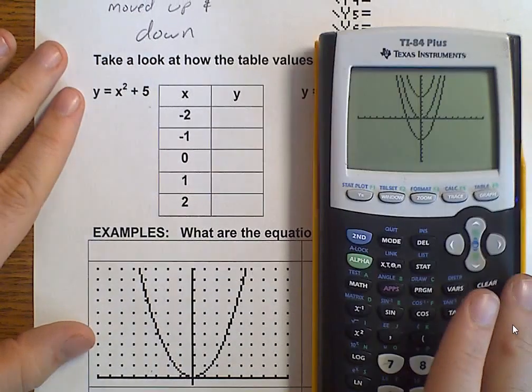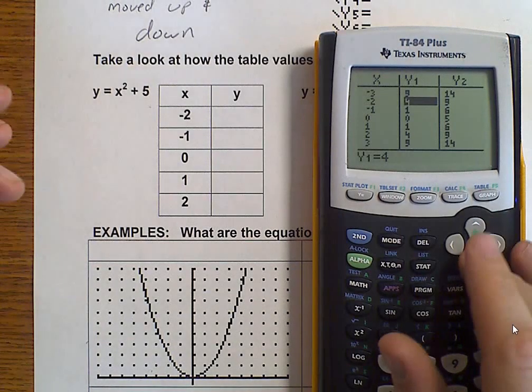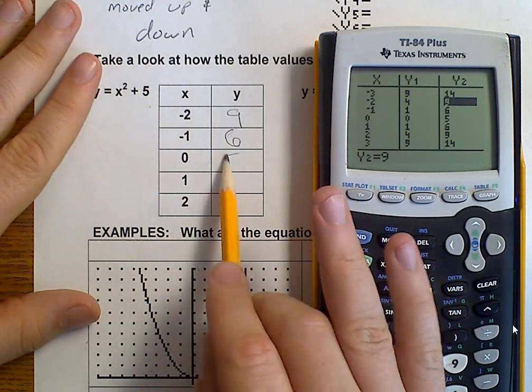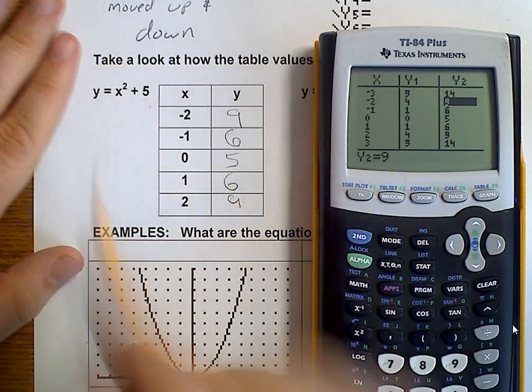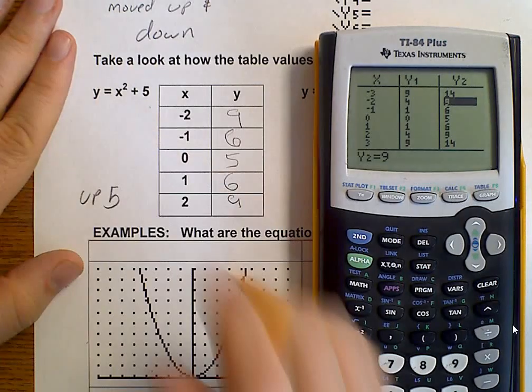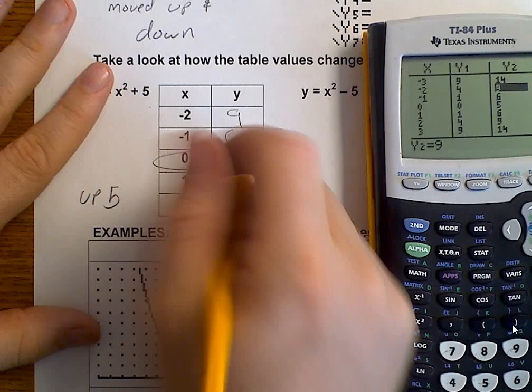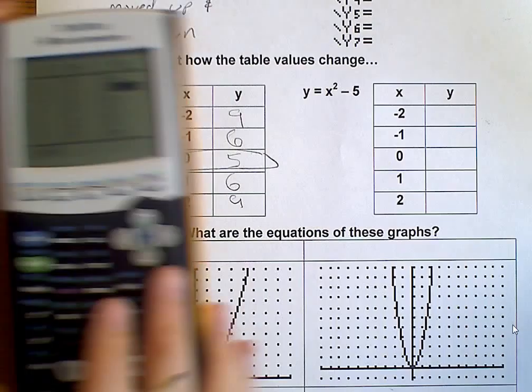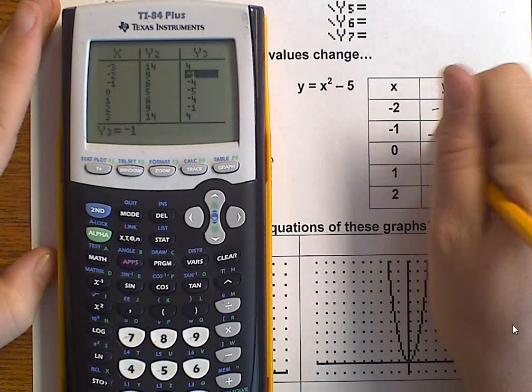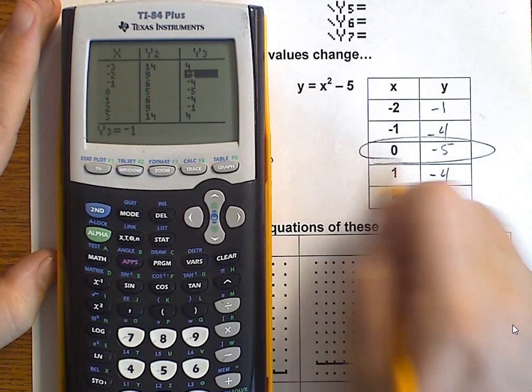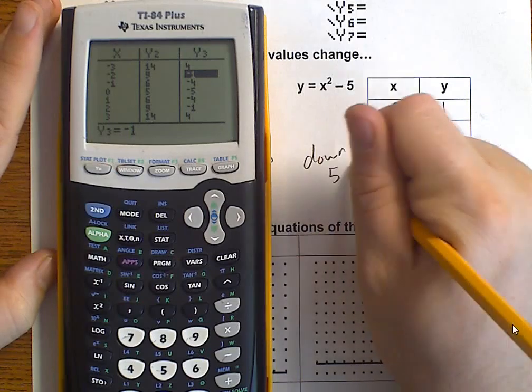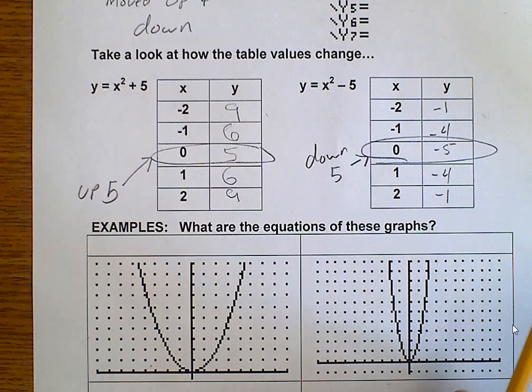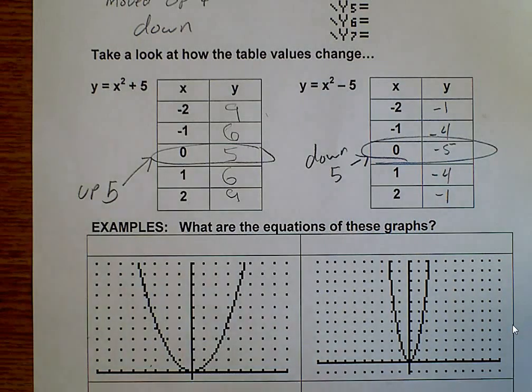It's basically all the change that we did. It either moved up or it moved down. We go to our table. Again, y1 is x squared. We're looking at y2. Now, we have 9, 6, 5, 6, 9. It went up 5. And notice how this one is changed. Okay? It went up 5. We look at y3. Negative 1, negative 4, negative 5, negative 4, negative 1. This one went down 5. Notice it was at 0, 0. Now, it's at 0, negative 5. So, that moved it up or down, depending on how we moved it, plus or minus.